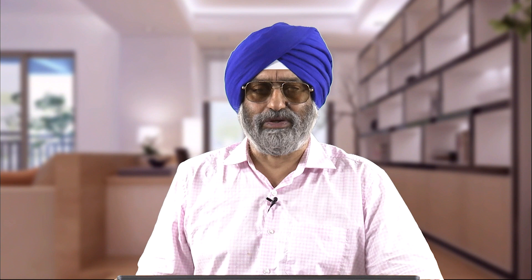The reverse cash and carry arbitrage takes place when the actual forward price F*0 is less than the arbitrage-free forward price F0. At t=0, we short the asset — borrow the underlying asset from a party and sell it in the spot market — receiving S0. We then invest S0 at the prevailing rate of interest for the maturity period of the forward contract, and simultaneously take a long position in a forward contract on the same asset that we have shorted.